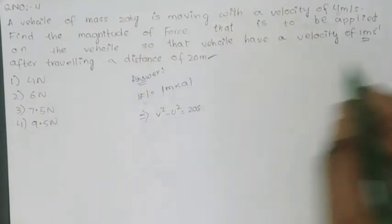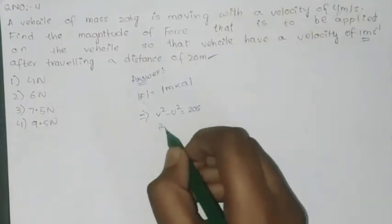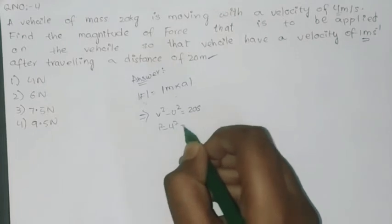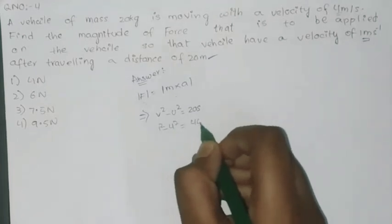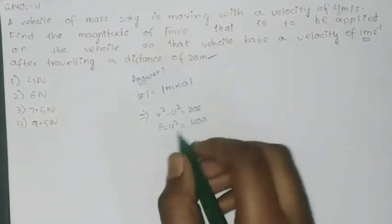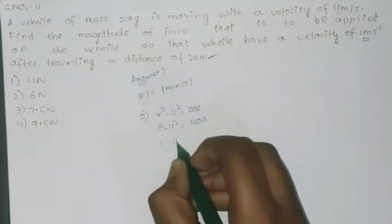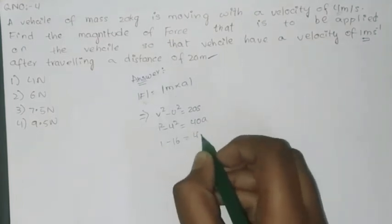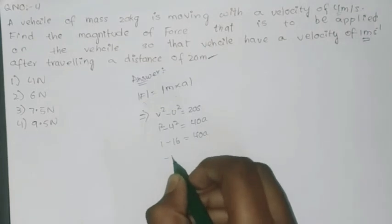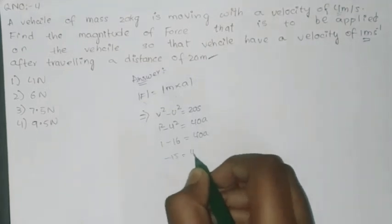First we will find acceleration. v² means 1² minus 4² equals to 40a. 1 minus 16 equals to 40a. Minus 15 equals to 40a.